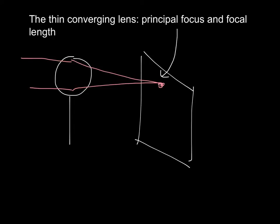Each lens has two principal foci, because the rays could also be coming from the other side and would still get projected into a point. So each lens has one principal focus on this side and one on the other side, because the rays of light can come from either direction. Now, because we're physicists and we like to draw things with a bit more precision, we're going to make a little diagram.